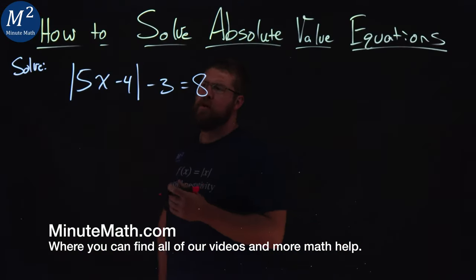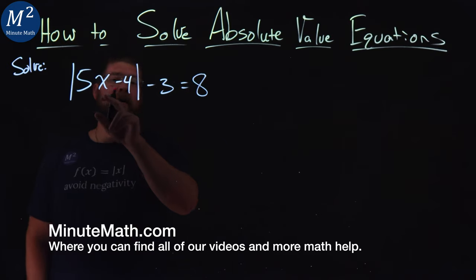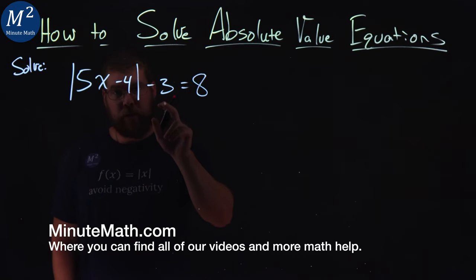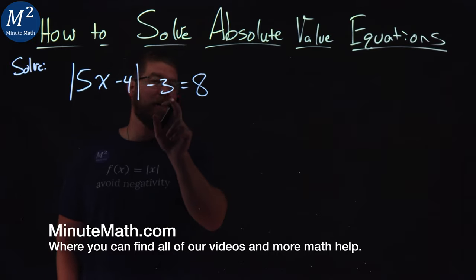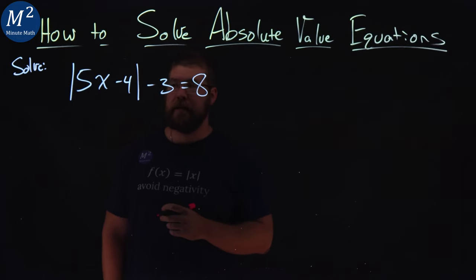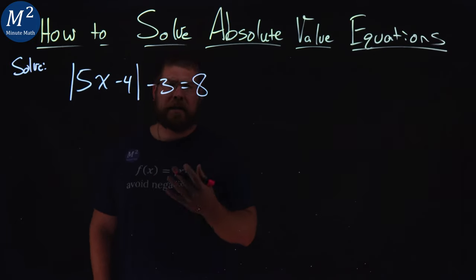We're given this problem here. We're going to solve the absolute value of 5x minus 4 minus 3—this first part's in the absolute value, minus 3 is outside of it—is equal to 8. And so we want to solve for x here.